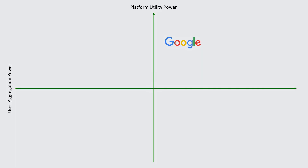To use an example that is way up in the right-hand quadrant: Google. Probably the highest of all — they've done an incredible job on user aggregation. In the early days they optimised for platform utility to users, and then as user aggregation increased they moved up and to the right to where they are now, doing an awesome job on both user aggregation and platform utility.